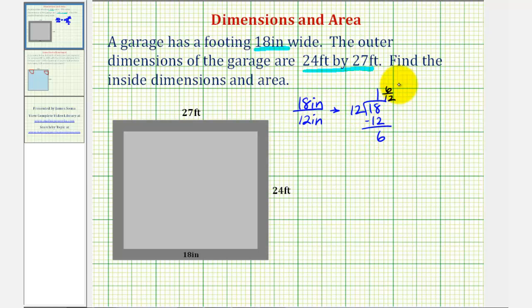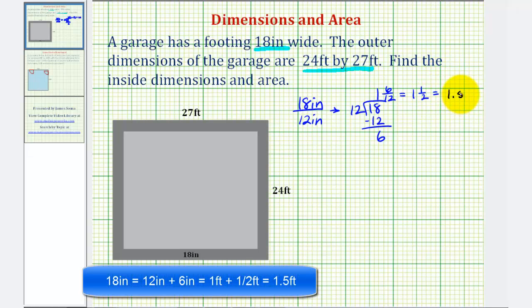We put the remainder over the divisor, but six twelfths is equal to one-half, so we can say one and one-half feet, or in decimal notation it would be 1.5 feet. So 18 inches is equal to 1.5 feet.